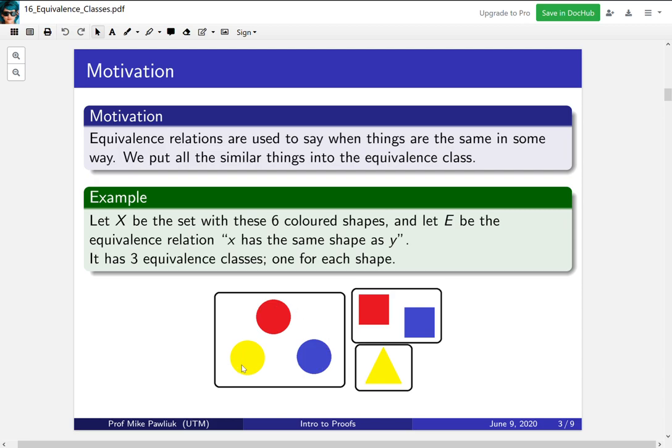And for example, this one will be the circle class, this will be the square class, and this will be the triangle class. One interesting thing to note is that the relation doesn't know ahead of time what shapes we have. The relation is only saying has the same shape. It isn't until afterwards where we partition everything that we can start naming things and say, oh, this is the circle one, this is the square one, this is the triangle one.